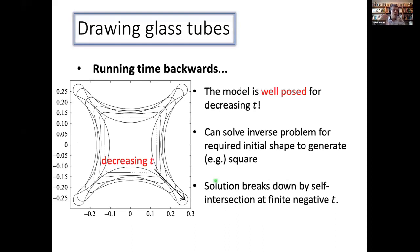And now one really surprising, but kind of interesting thing about this model is it's well posed for decreasing time as well. So here's an example. We start off with this square shape here. We run time backwards. And this is telling us now what shape would I need to start with so that I produce a square sometime later. So that inverse problem, you can actually solve explicitly.